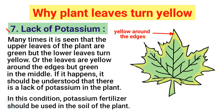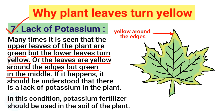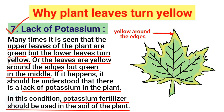Lack of potassium — many times it is seen that the upper leaves of the plant are green but the lower leaves turn yellow, or the leaves are yellow around the edges but green in the middle. If this is the case, it should be understood that there is a lack of potassium in the plant. In this condition, potassium fertilizer should be used in the soil.